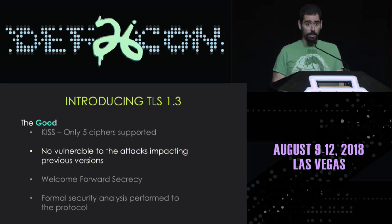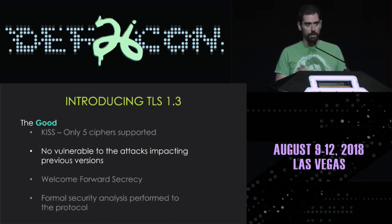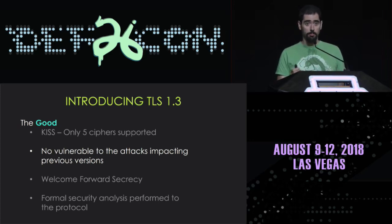Another good thing is that TLS 1.3 will not be vulnerable to previously known attacks against prior TLS versions. For example, RC4, RSA, CBC encryption mode, or even compression attacks — good luck finding them in TLS 1.3, because you are not going to find them.